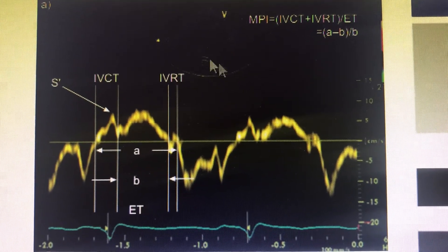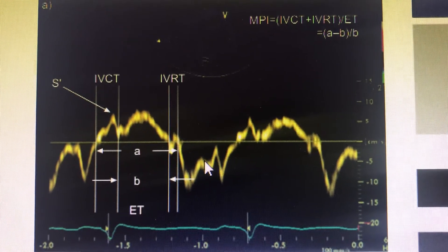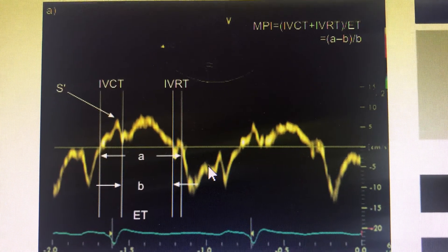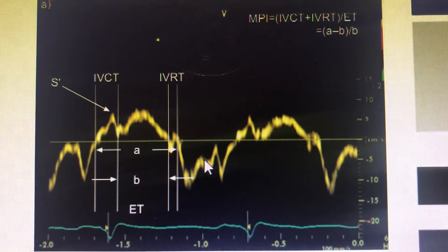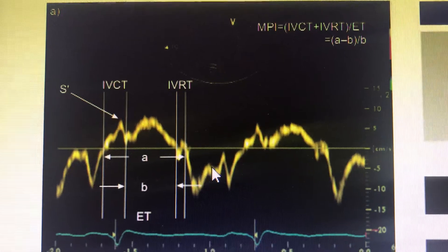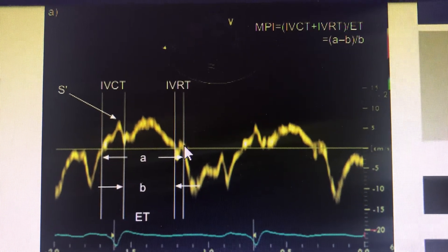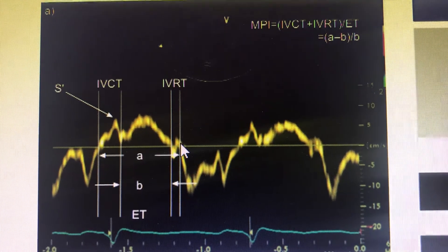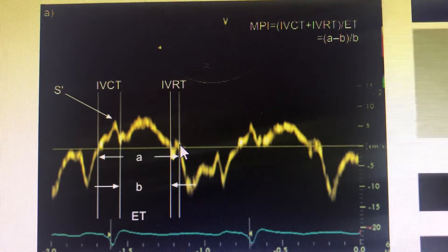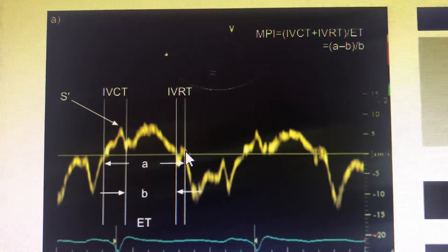If IVCT or IVRT is prolonged, the myocardium is taking more time to relax and contract, indicating dysfunction. MPI is a marker of the overall myocardial environment, including both diastolic and systolic function. Any impairment will cause MPI to increase.